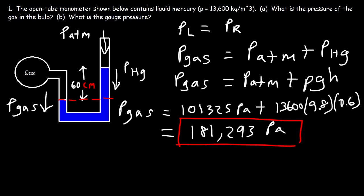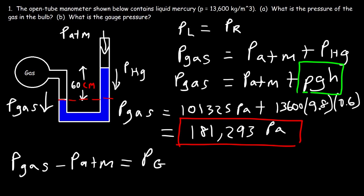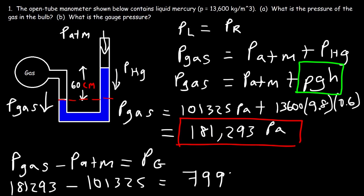Now what about the gauge pressure? The gauge pressure is the difference between the absolute pressure — which is the pressure of the gas — and the atmospheric pressure. The gauge pressure is basically the pressure due to the weight of the mercury column, which is rho·g·h. So 181,293 pascals minus 101,325 pascals gives us 79,968 pascals. That's the gauge pressure — it's the pressure that is above the atmospheric pressure.